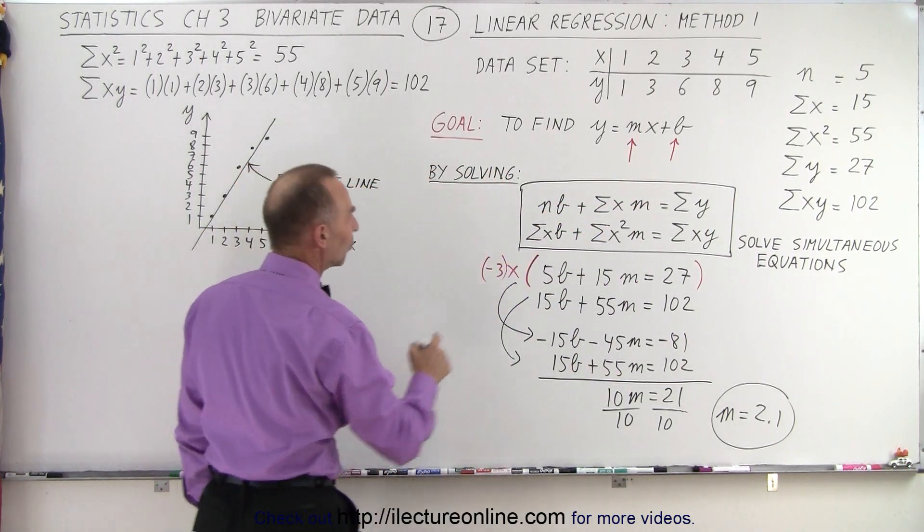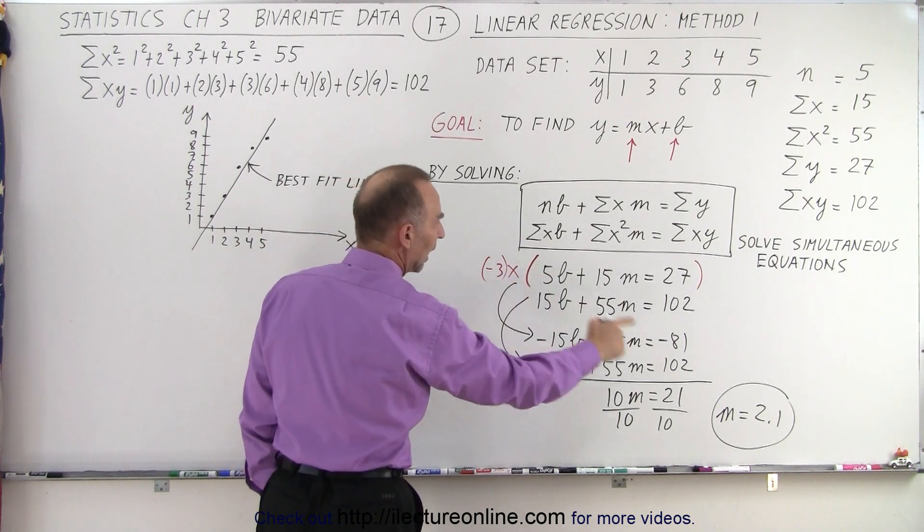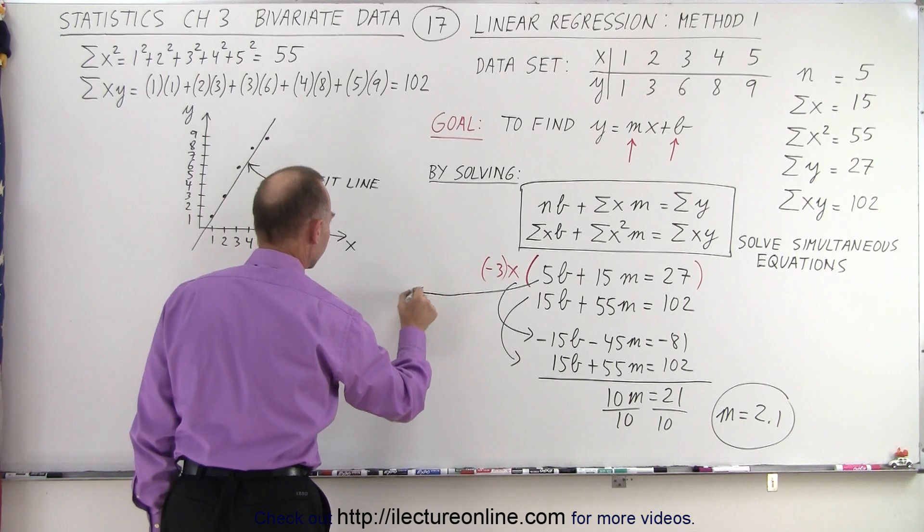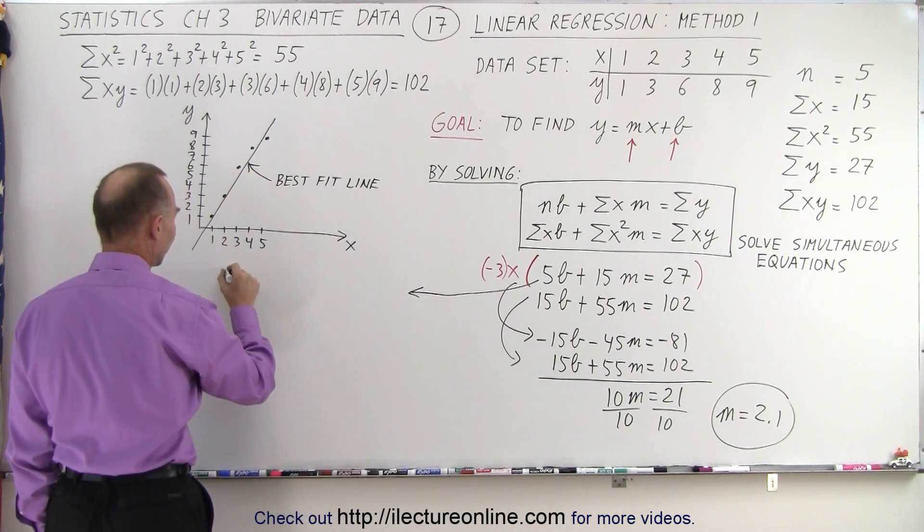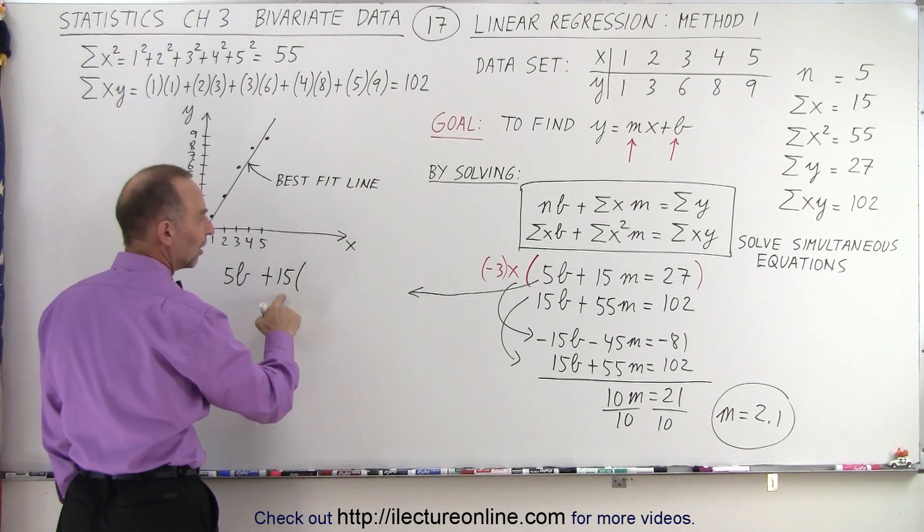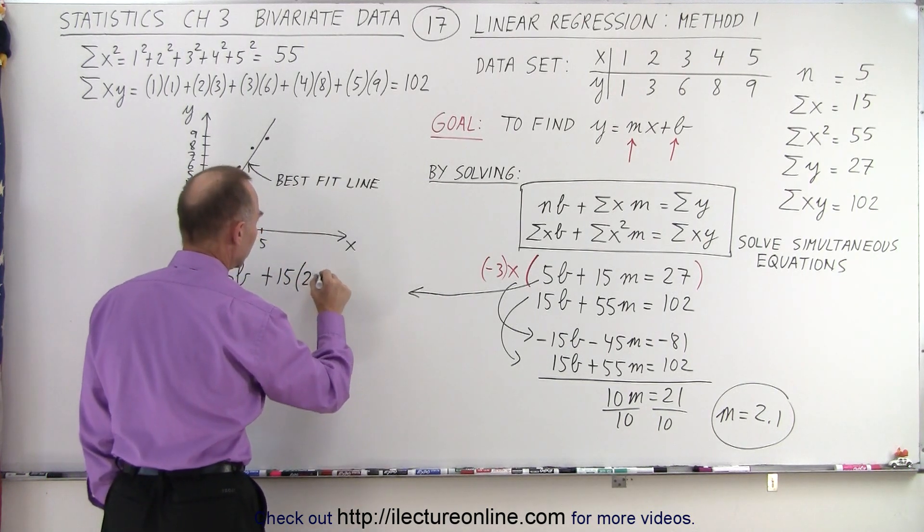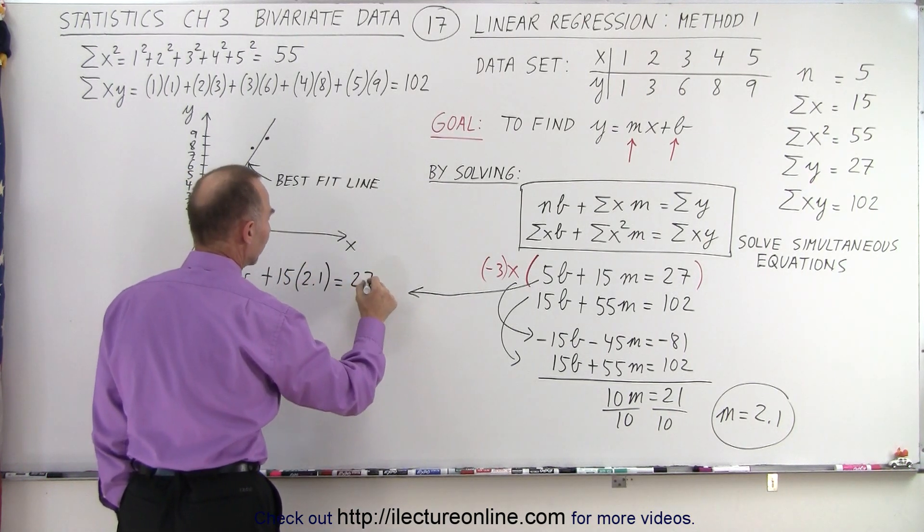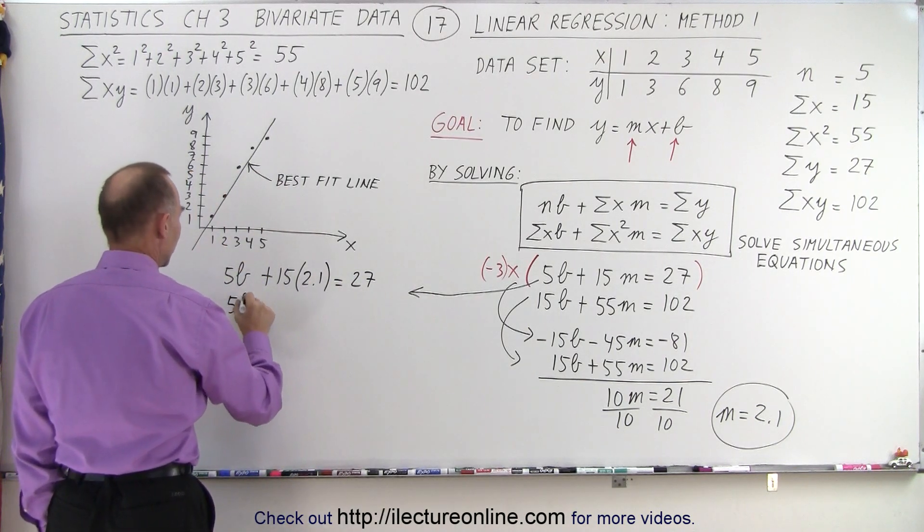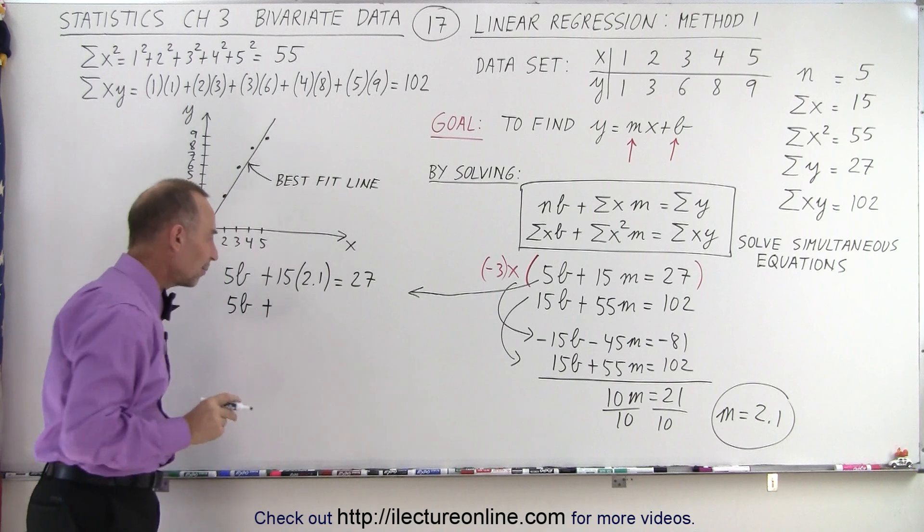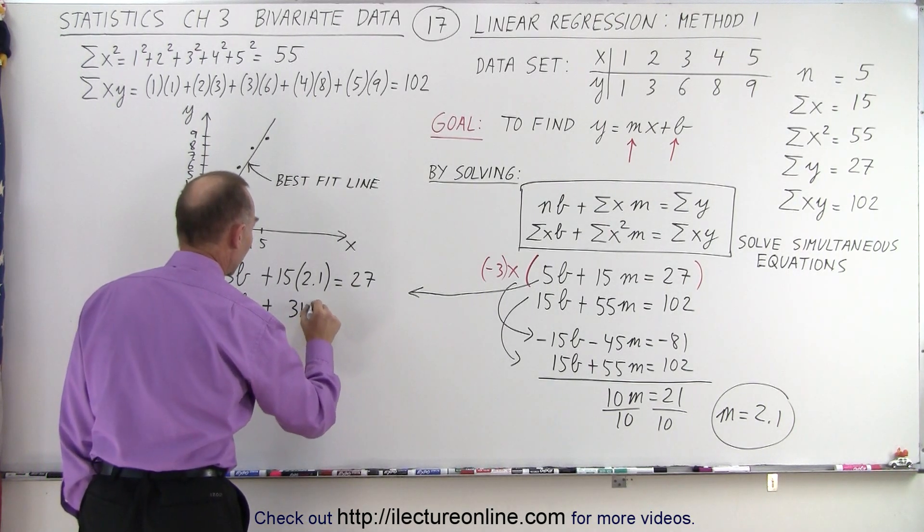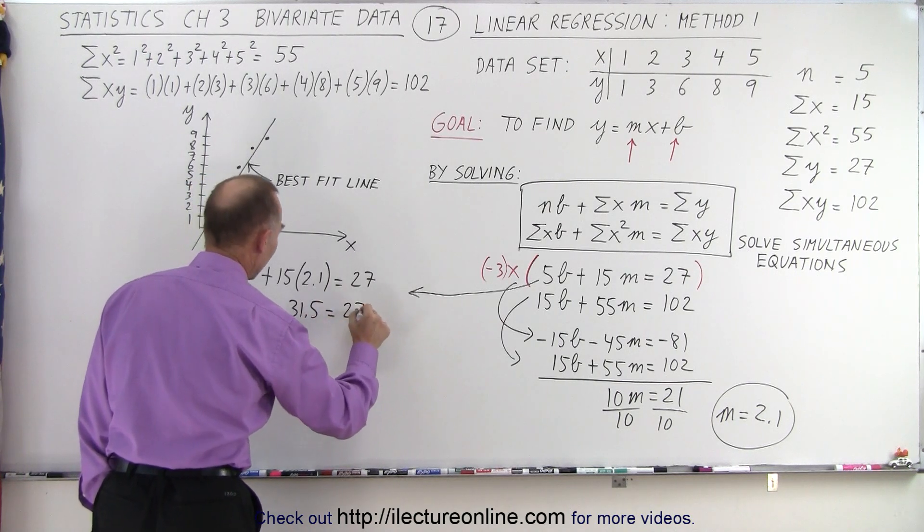So now that we have that, we can take our first equation and use that to solve for b. So now we take our first equation right here, and we write that 5b plus 15m. But instead of m, we're going to write 2.1 is equal to 27. So that is 5b plus, what's 15 times 2? That's 30. What's 0.1 times that? That's 31.5. 31.5 equals 27.